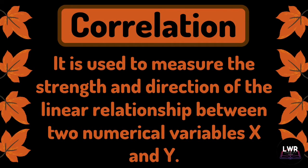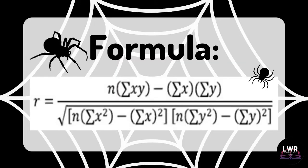Pearson's Correlation is used in statistics to measure the strength and direction of the linear relationship between two numerical variables, x and y. It is denoted by the variable r and is computed using the formula: